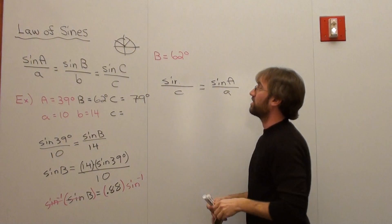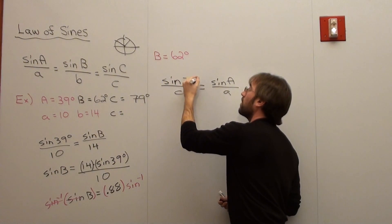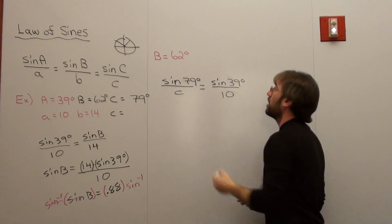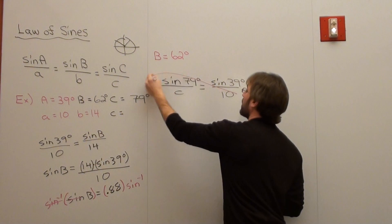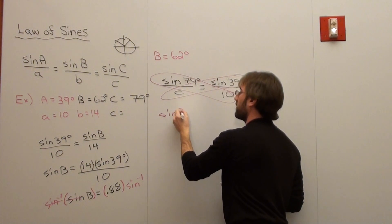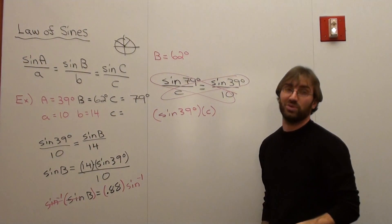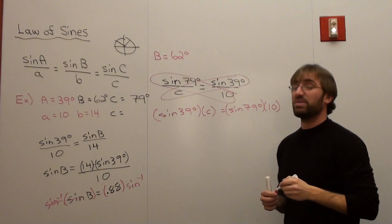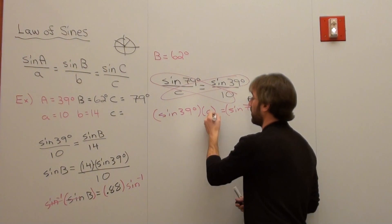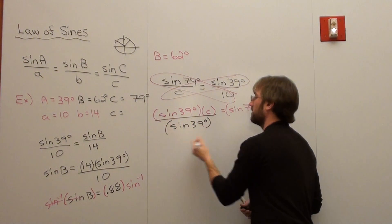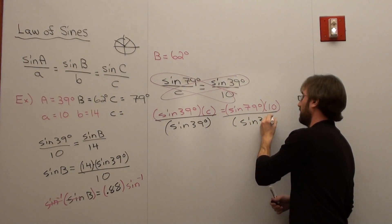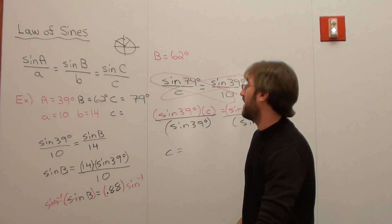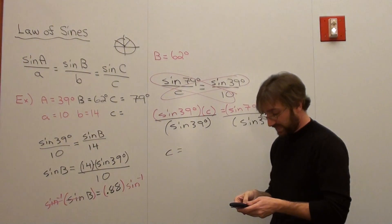I should have just plugged in the values. Sine of 79 degrees over C, which I don't know, equals sine of A, which is 39 degrees over 10. So I'm going to cross multiply to get the C by itself. I get sine of 39 degrees times C equals sine of 79 degrees times 10. Get the C by itself, divide it by sine of 39 degrees. I can tell you for a fact that it's got to be bigger than 14 because 79 degrees is bigger than 72.